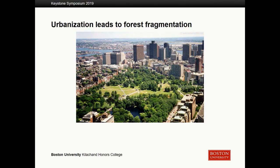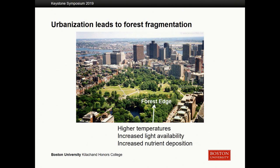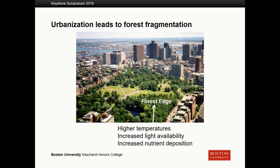In this picture of the Boston Commons, you can see two patches of forest. A forest edge is anywhere where the continuous canopy ends and there's a shift in the environment beyond it — a field, a road, buildings, things like that. Forest edges experience a different suite of environmental factors than the forest interior. For instance, they often have higher temperatures, increased light availability, and increased nutrient deposition compared to the forest interior.